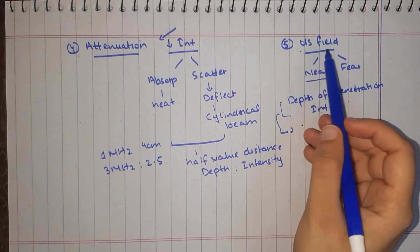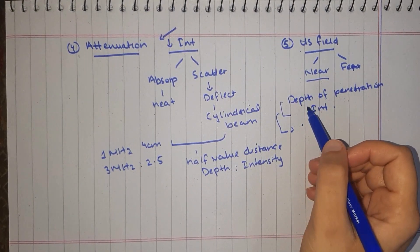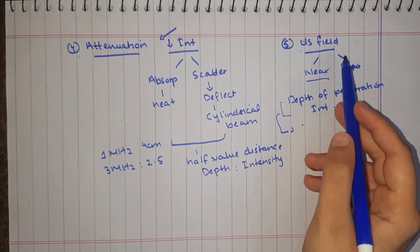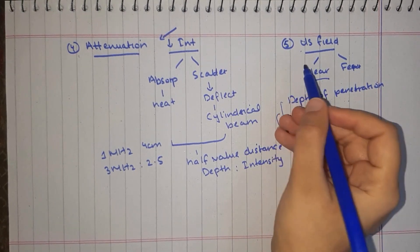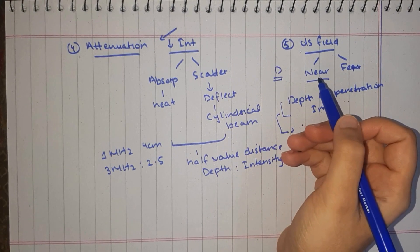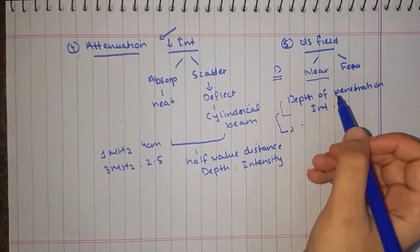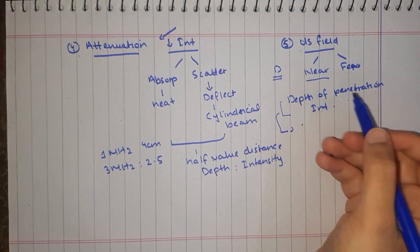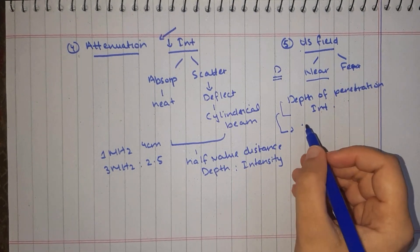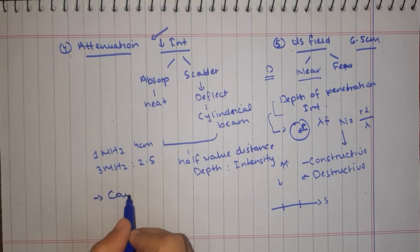The next parameter is the ultrasonic field. There are two types: near field and far field. These depend on depth of penetration and intensity. Different body parts are treated at different distances, and the near field has a more intense effect as compared to the far field. Most commonly we focus on the near field for treatment.